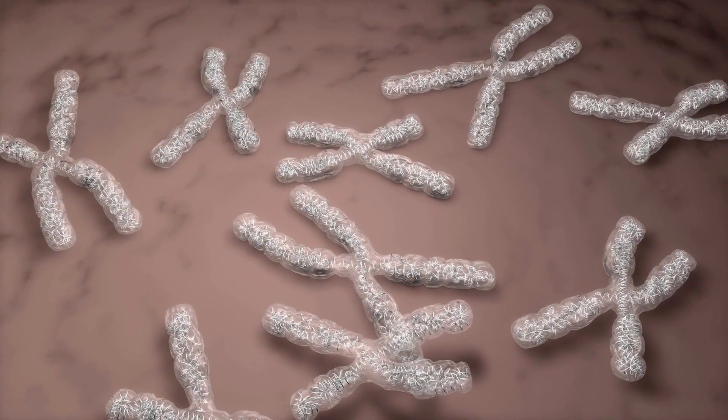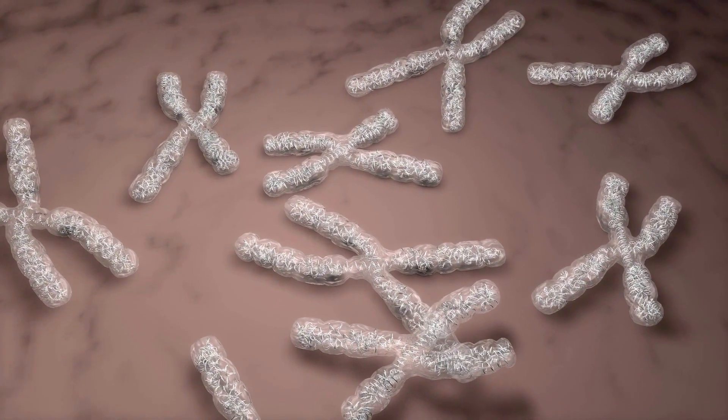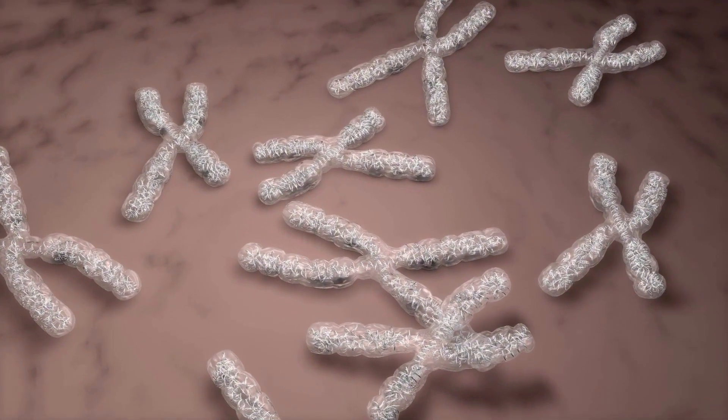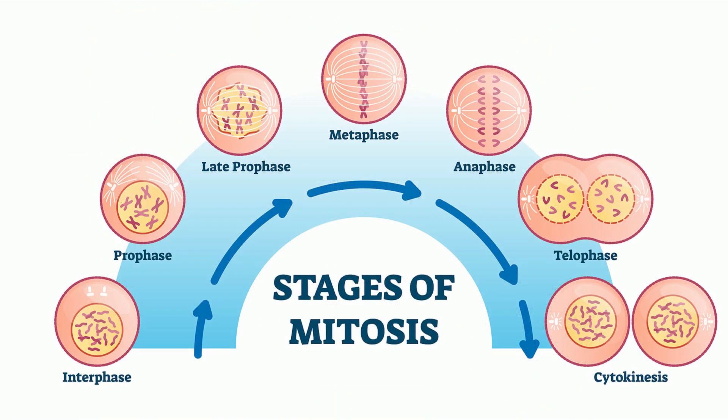Your chromosomes contain the blueprints for what you look like. When you look at this karyotype, can you identify the sister chromatids and the homologous chromosomes? Let's move through the cell cycle and see the difference between these.